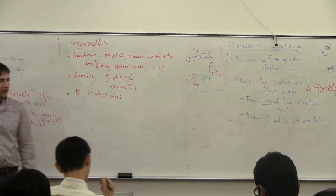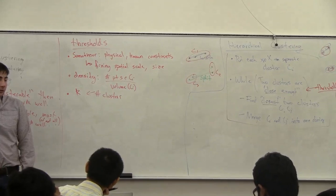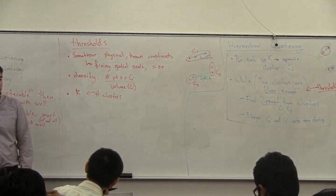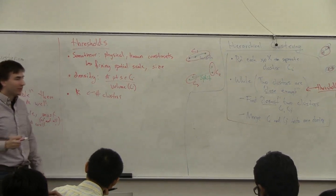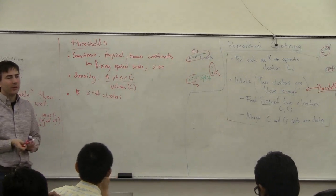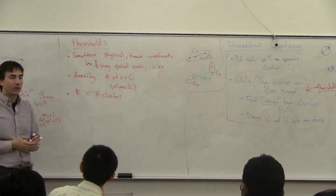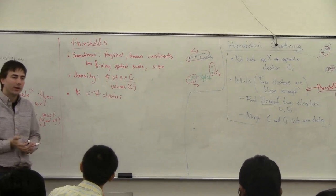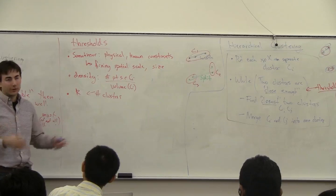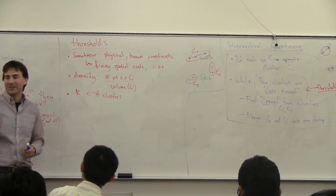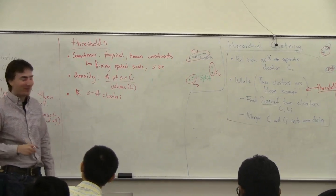Sometimes there are reasons for specifying K. If you're the postal service trying to downsize your post offices, you can say, I only have a budget to keep open 10 post offices in Salt Lake — where should I put them? Your budget specifies how many you're allowed to have.